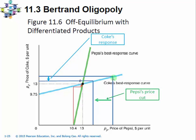A similar story applies from another starting point. If Pepsi starts at a different price, Coke will set at the corresponding level on its best response curve, and then Pepsi will respond on the dark green line. In response to that price, Coke will adjust its price accordingly. Still, in equilibrium, both parties set their own prices at $13. Because $13 is the best response for both firms to the price set by the other firm, this is a Nash equilibrium.